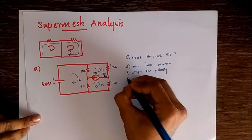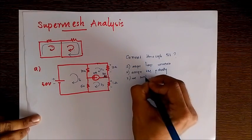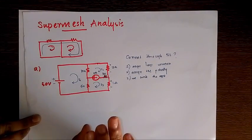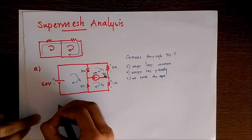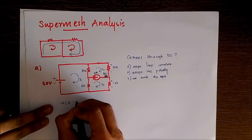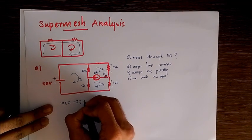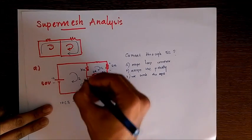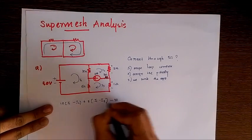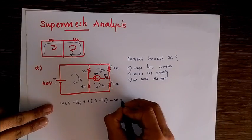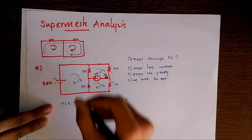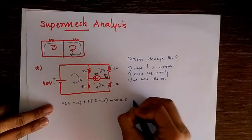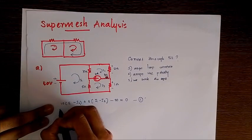Next we write the equation for the first loop. This is a normal loop, so we write: 10 times i1, minus i2 terms, plus i1 minus i2, plus i1 minus i3. As I encounter the negative sign first, i1 is given more importance because we consider the loop current, so we subtract the other currents. This gives us the first mesh equation.